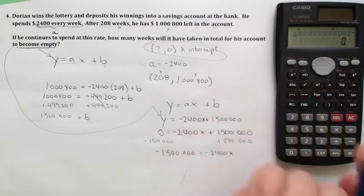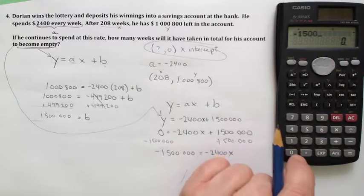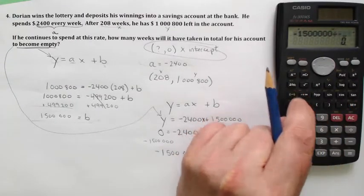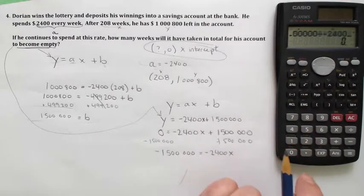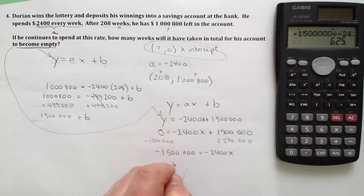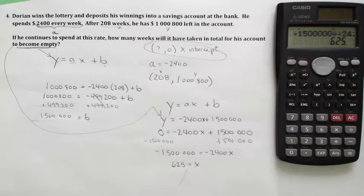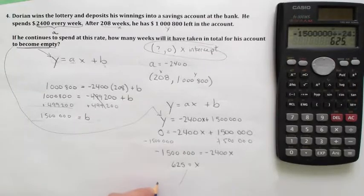So negative $1,500,000 divided by negative $2,400—and that's going to give me 625 is my x. So when x has gone to 625 weeks, he will have no money left.